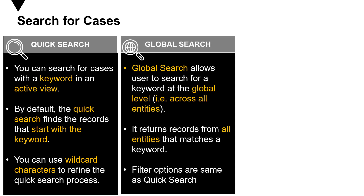The second method is a global search. As the name suggests, global search allows users to search for a keyword at the global level — that is, across all entities. It returns records from all entities that match that keyword, and the filter options are the same as the quick search.